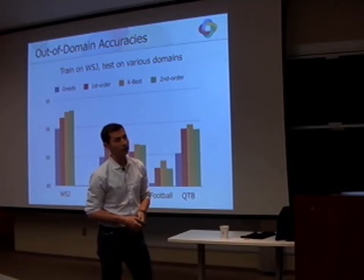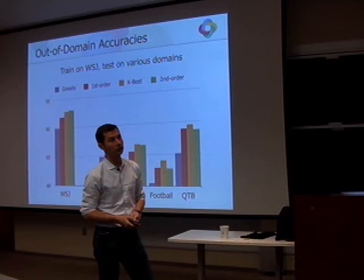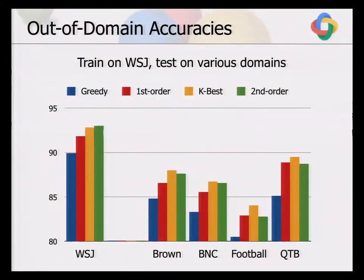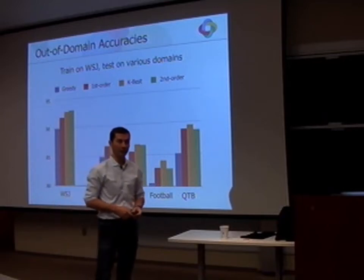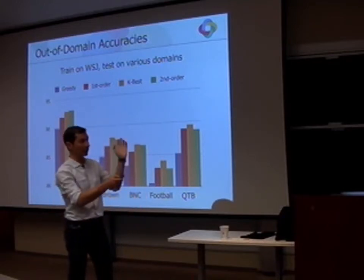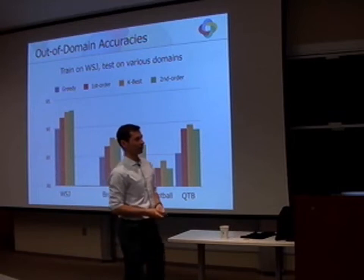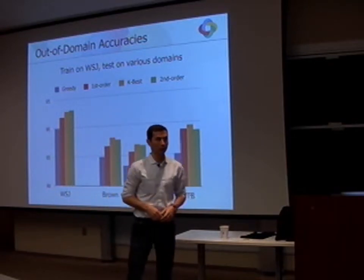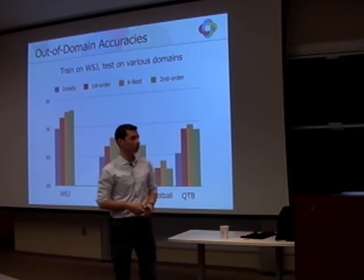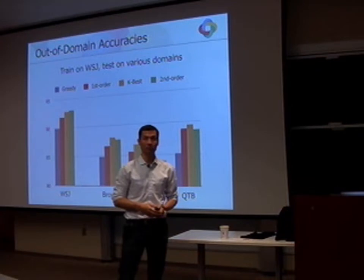The two differences we see across domains are not just general accuracy drops but actual differences between models: the second-order model is more accurate than the k-best shift-reduce model on the Wall Street Journal, but on out-of-domain data this difference can disappear. It shows that graph-based models are good at memorizing Wall Street Journal patterns but don't generalize as well — which is likely a features and training issue rather than a fundamental model problem. So just trying to get the highest number on the Wall Street Journal may not be the best strategy.